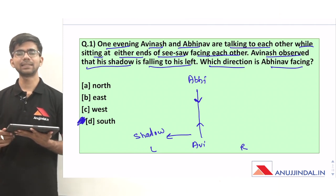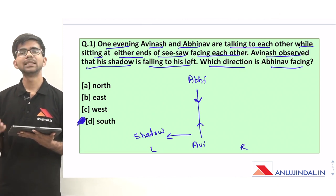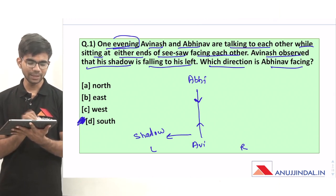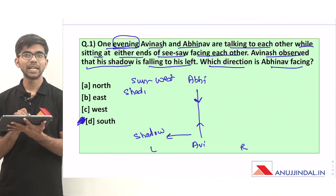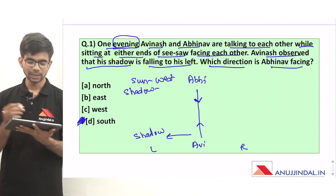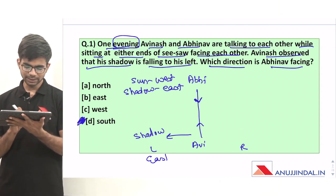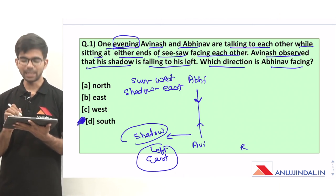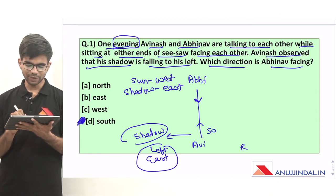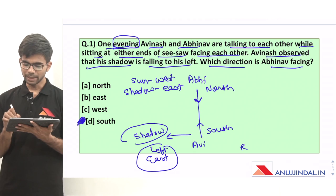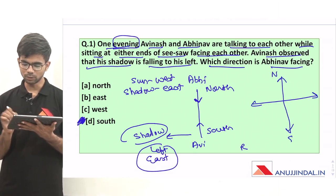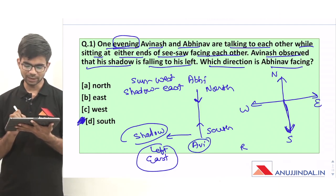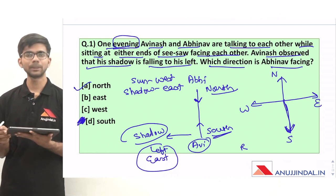We know the sun rises in the east and sets in the west, so in the morning sun is in the eastern direction. But in the evening, the sun is in the western direction. Since the time is evening, the sun is in the west, so the shadow will be formed in the opposite direction — east. The left of Avinash is east, so Avinash is facing south and Abhinav is facing north. For a person facing south, east direction lies to the left. So the correct option is option A, north.